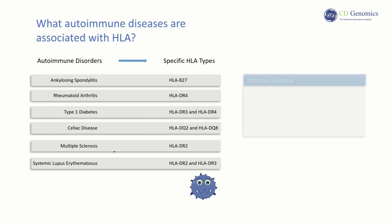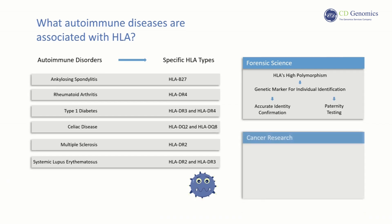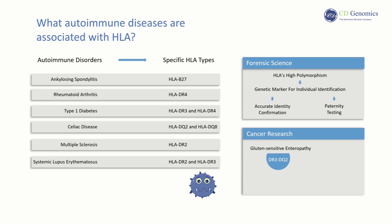Moreover, HLA typing can be used in various fields. In forensic science, HLA's high polymorphism makes it a reliable genetic marker for individual identification, crucial for accurate identity confirmation and paternity testing. In cancer research, certain HLA variants, like DR3-DQ2 in gluten-sensitive enteropathy, heighten cancer risks. Conversely, HLA also identifies abnormal cells for immune-mediated elimination, supporting early cancer detection.